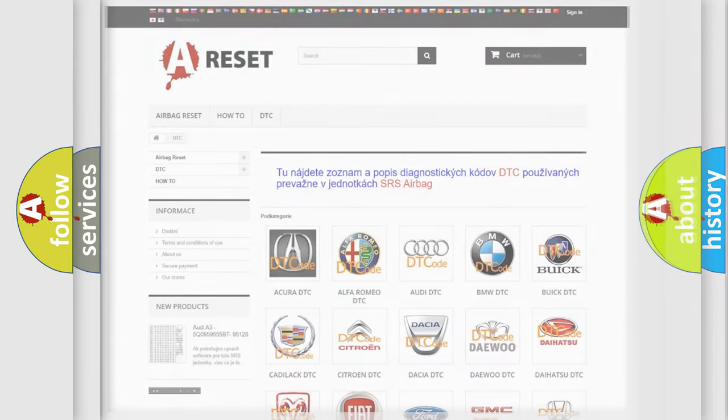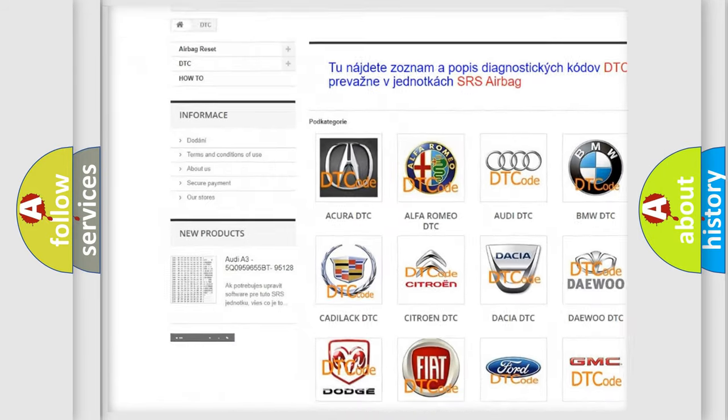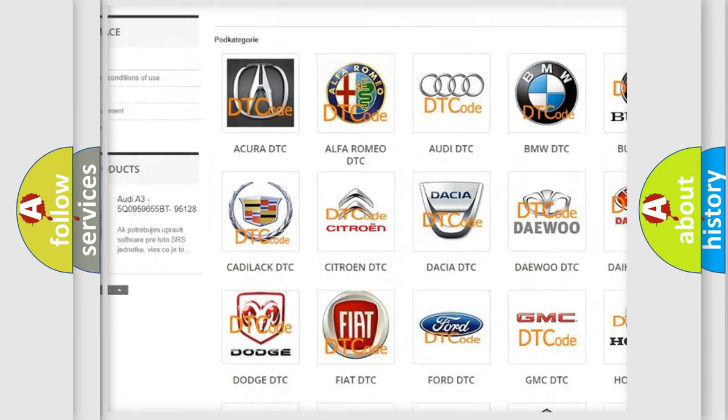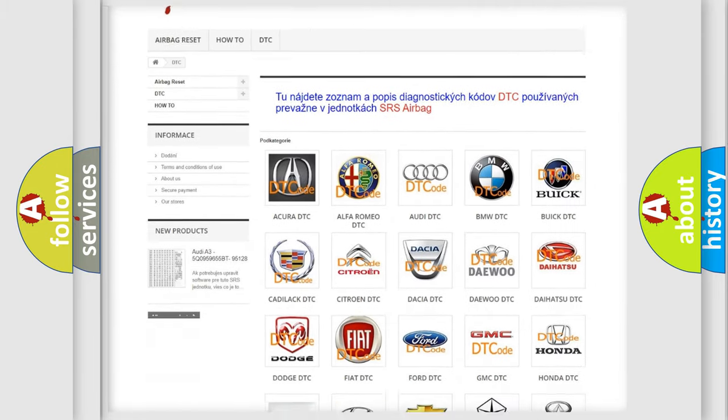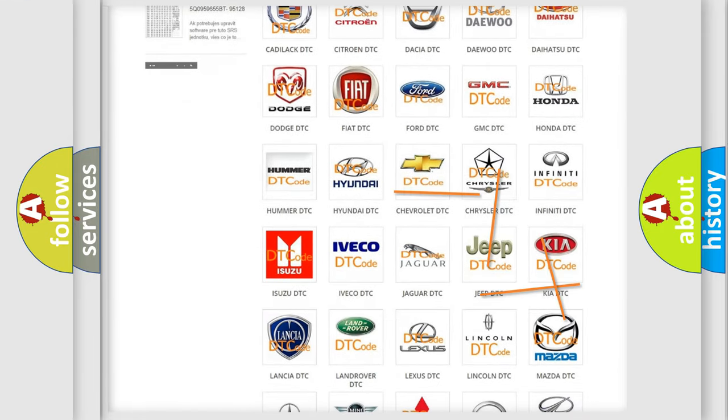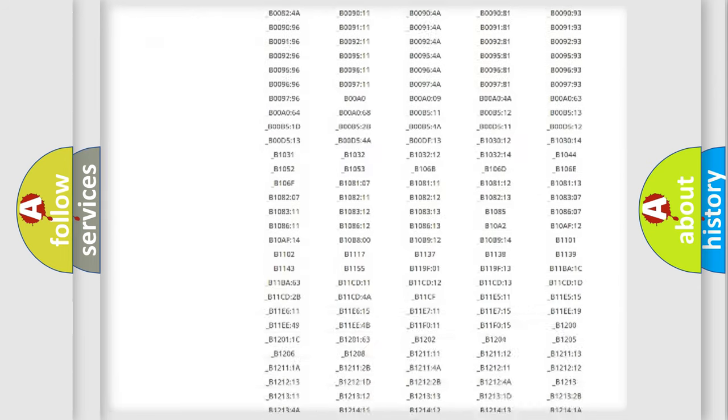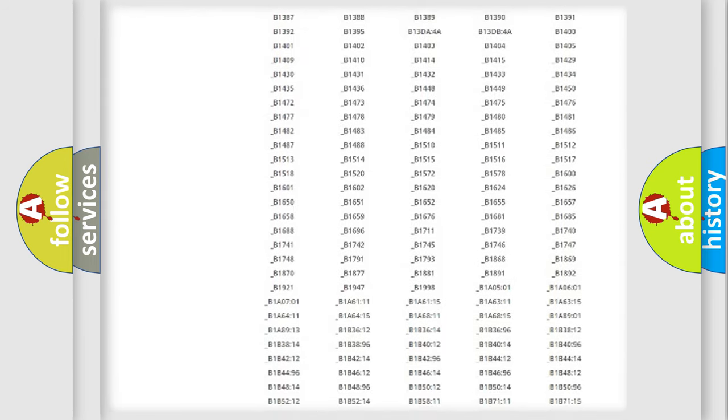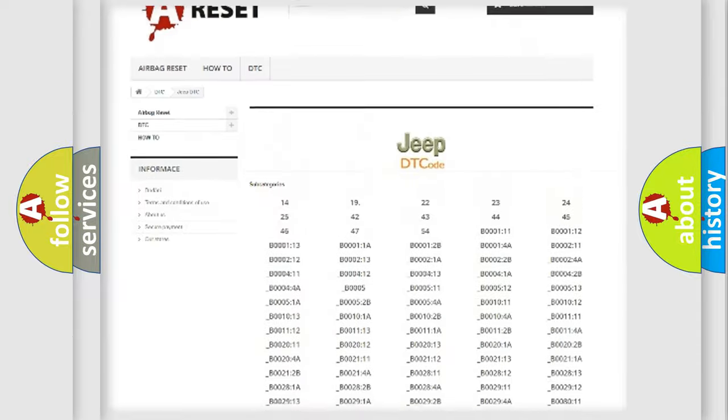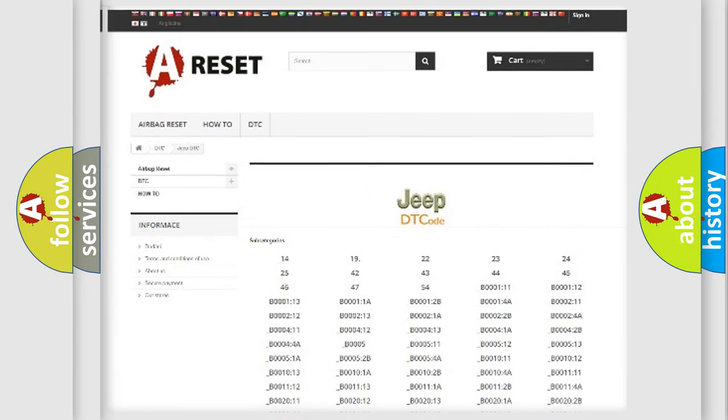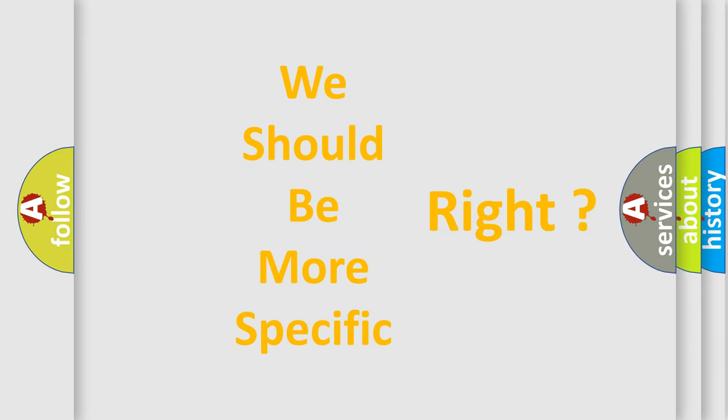Our website airbagreset.sk produces useful videos for you. You do not have to go through the OBD2 protocol anymore to know how to troubleshoot any car breakdown. You will find all the diagnostic codes that can be diagnosed in Jeep vehicles, and also many other useful things. The following demonstration will help you look into the world of software for car control units.